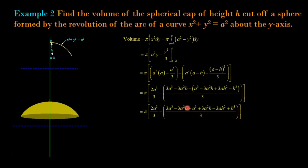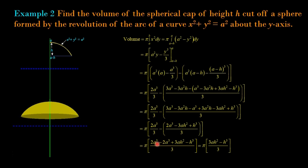After expanding and simplifying, the −3a²h terms and +3ah² and −h³ terms are collected. The 2a³ terms cancel, leaving the remaining terms: 3a²h − h³, divided by 3. Therefore the final volume of the spherical cap of height h is V = πh²(3a − h)/3.